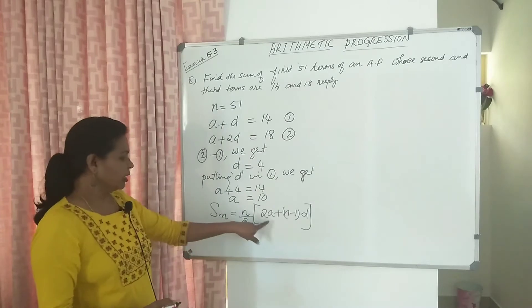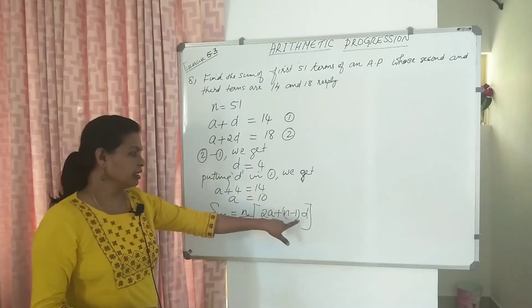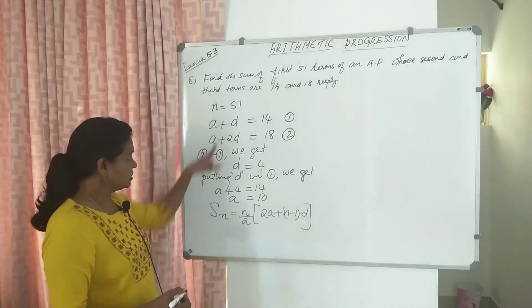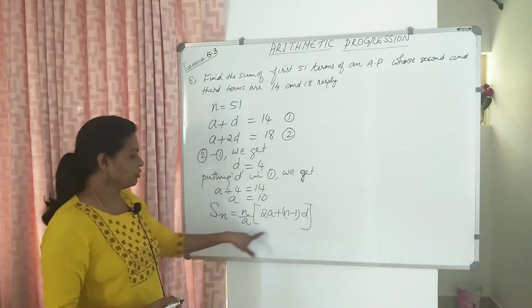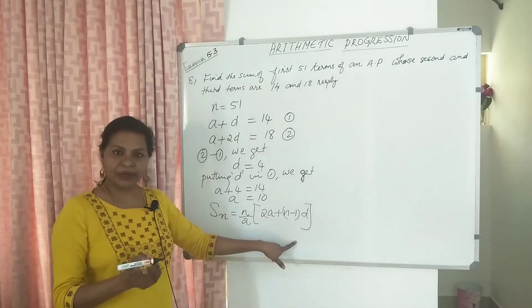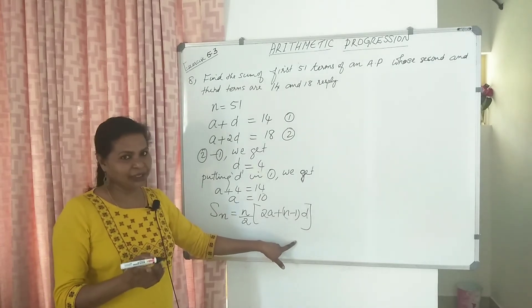N is there, A is there, D is there. All values are known. Just substitute the values and find the sum.